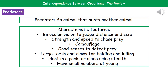Predators also need good senses to detect prey in the first instance. When it comes to the actual killing, they need large teeth and sharp claws for holding and killing the prey. Their behavior is slightly different too — they will either hunt in a pack, or if they hunt alone, they will use stealth methods, creeping up very quietly to get as close as possible before they strike. Finally, when they give birth, they will only have small numbers of young, meaning they don't have to catch as much food to support that litter.